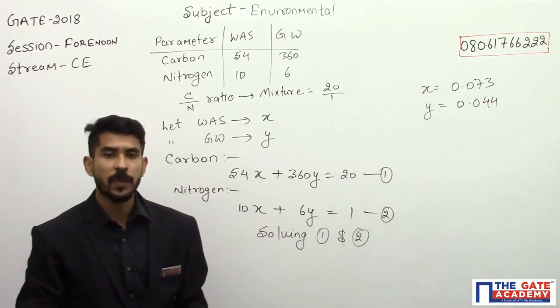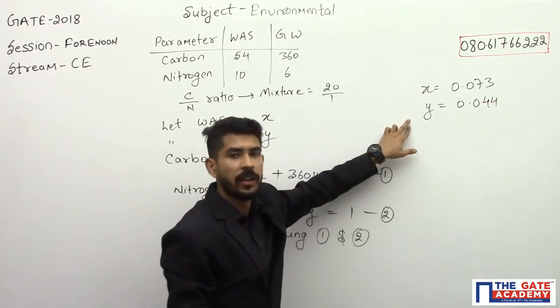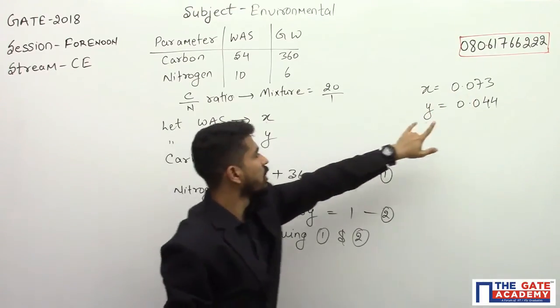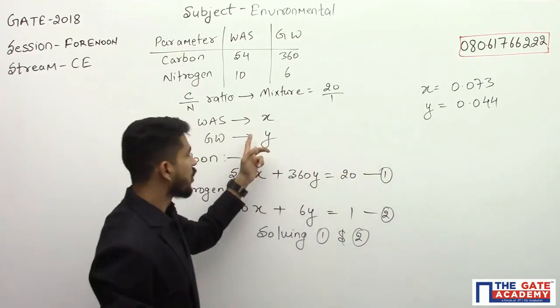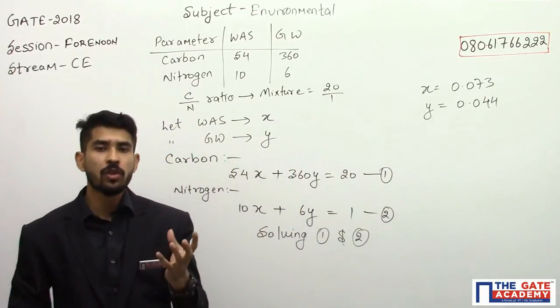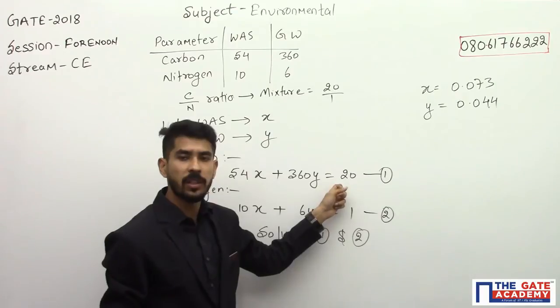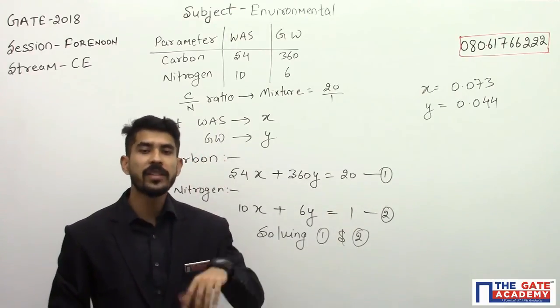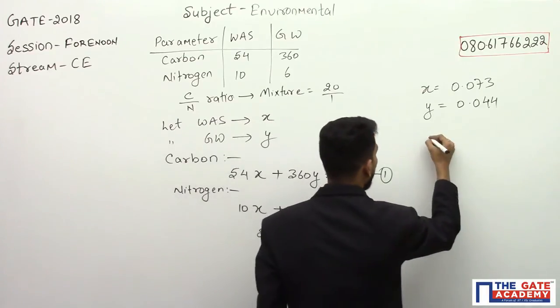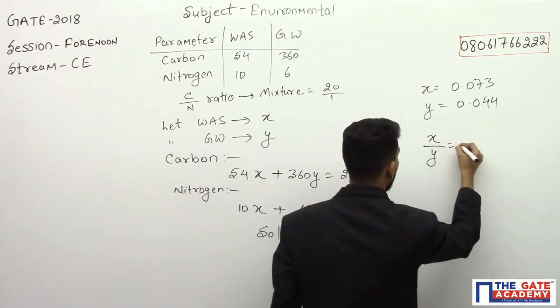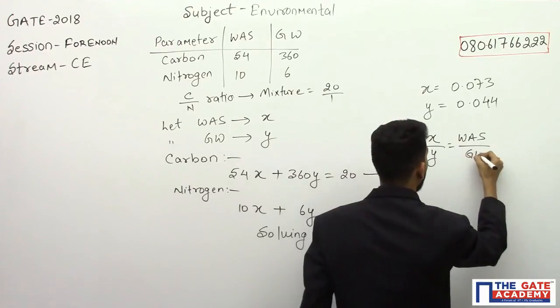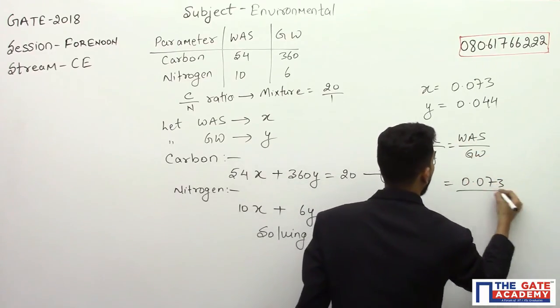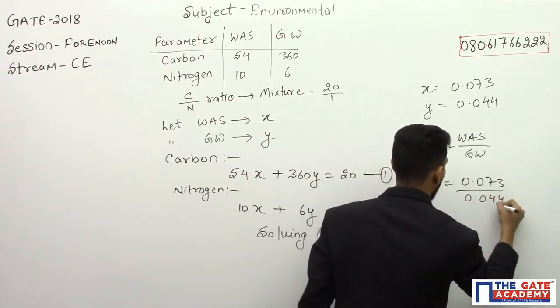These are the respective values of X and Y. This much amount of units of WAS and this much amount of units for GW has to be used to obtain a C by N ratio of 20 is to 1. He is asking what is the ratio, so X divided by Y equals WAS divided by GW, which equals 0.073 divided by 0.044, which equals 1.65.